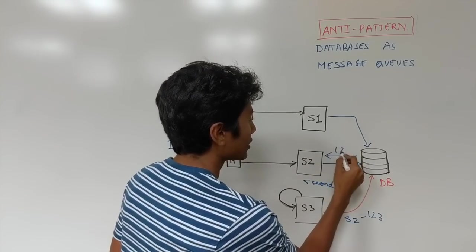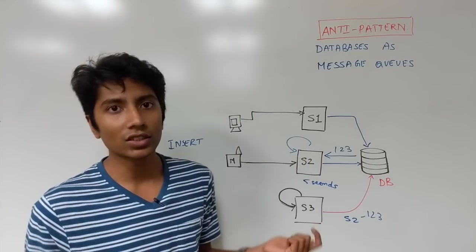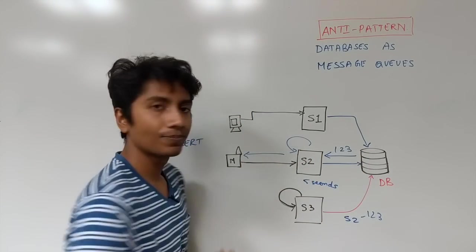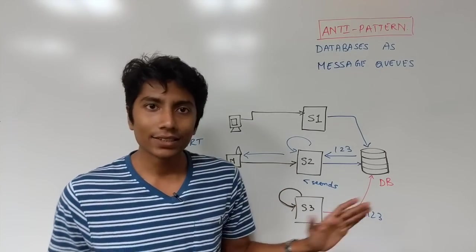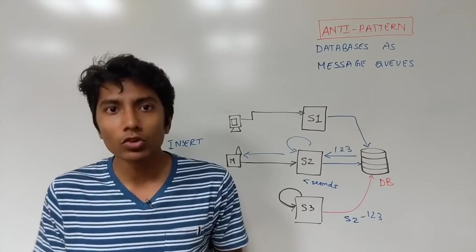Let's say the ID was 123, so it gets message ID 123, does something, and it might change its internal state or send something to the client. This is a standard queue. There's nothing great about it, just the database is being used as a queue.